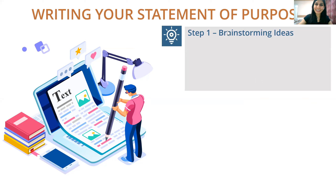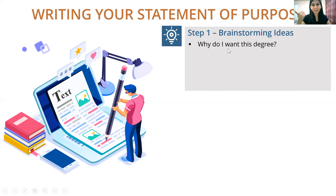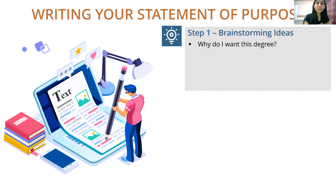To write your statement of purpose, start with brainstorming ideas — don't just sit down and write. Think about: why do you want this particular degree and not any other? Why are you motivated to pursue this specific program at this university? The admissions committee wants to know your genuine motivation for choosing this particular program and institution, not just generic reasons like wanting better job opportunities.